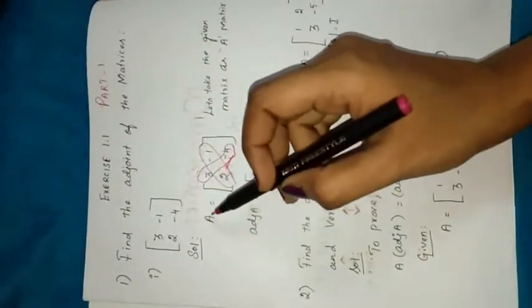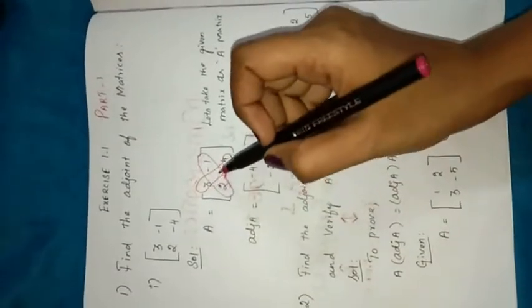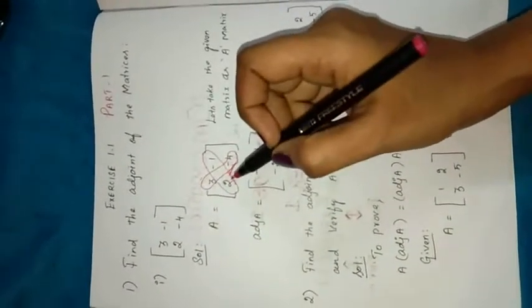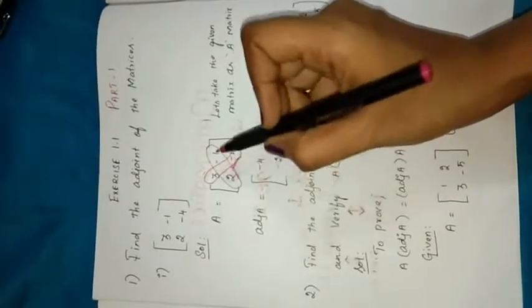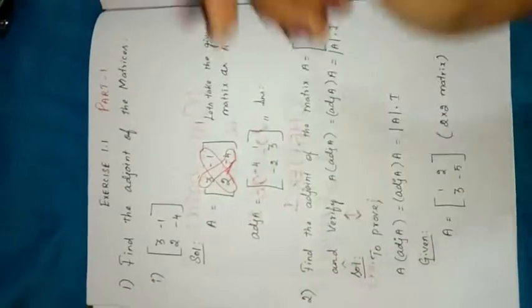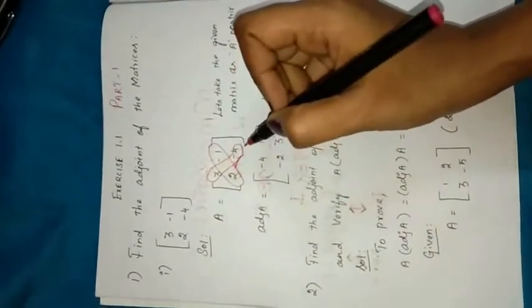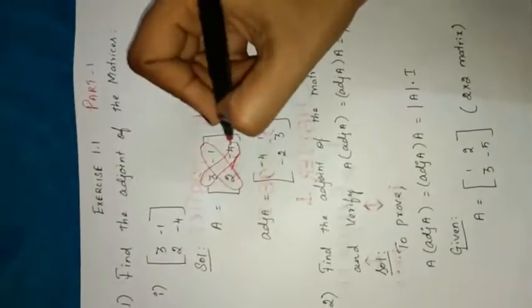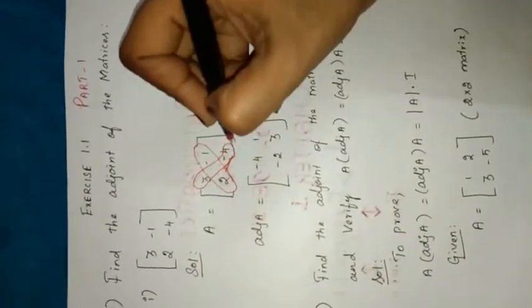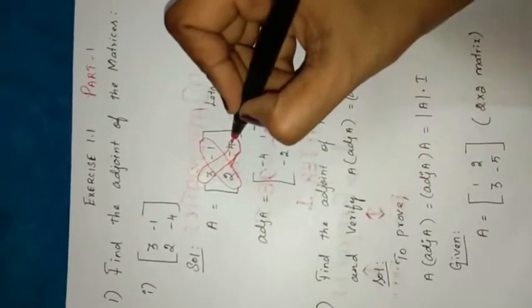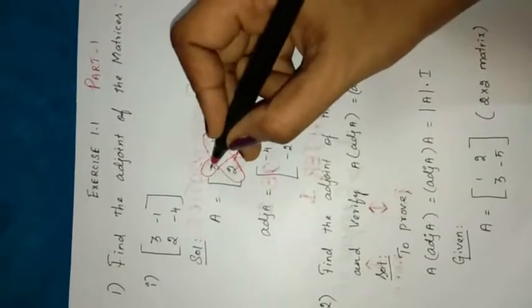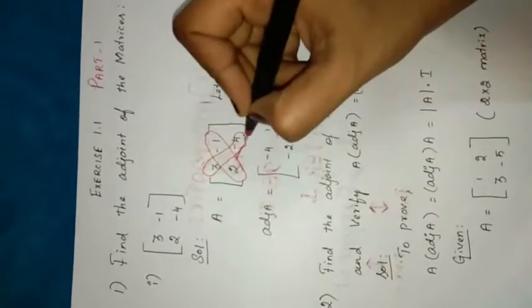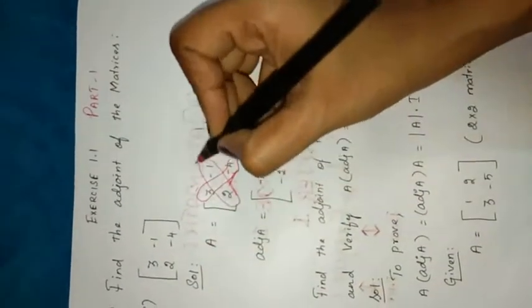Let's take the given matrix as matrix A. The given matrix is in the form of a 2x2 matrix, which means there are 2 rows and 2 columns. To find the adjoint of a 2x2 matrix is very easy — we just have to relocate the place of an element. For this cross section, minus 4 will go there and 3 will come here.